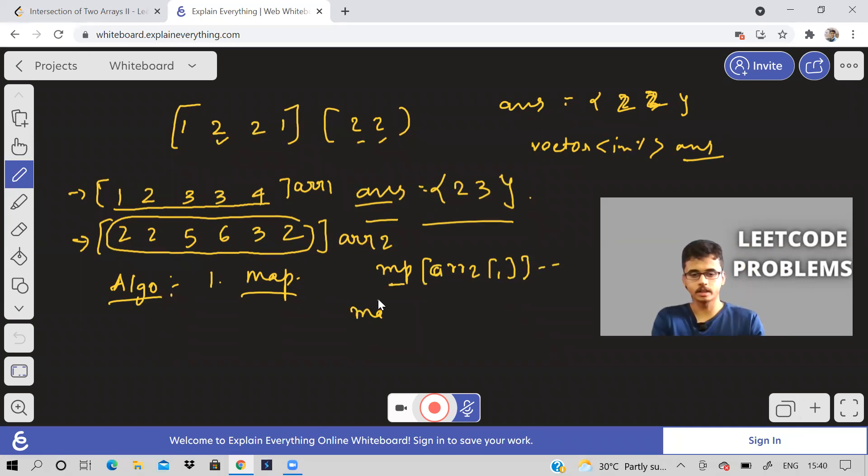And once the count reaches to zero, that means if the frequency of this element becomes zero, we need to erase it from the map. Why are we erasing from the map? Because then we will only store those elements which occur in both arrays. We will get the intersection only, we will not be taking all the elements.